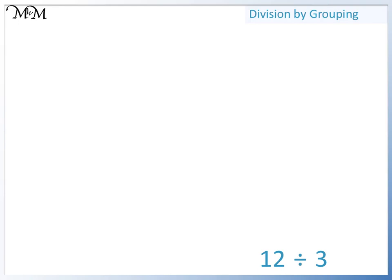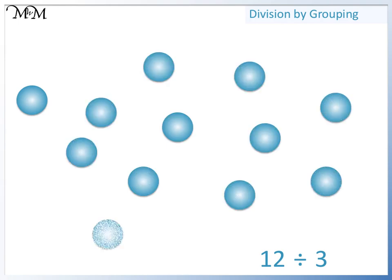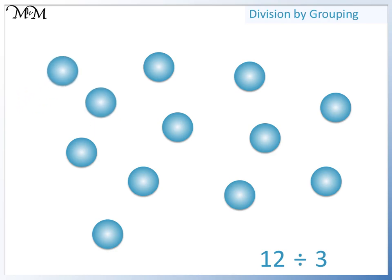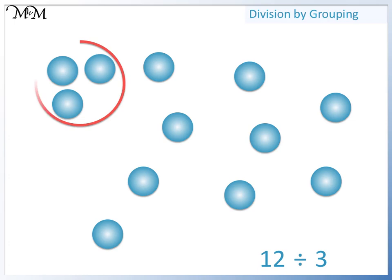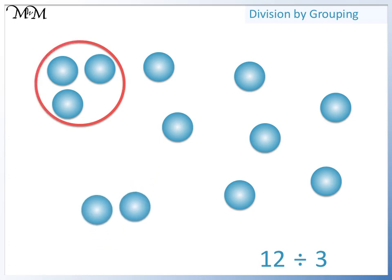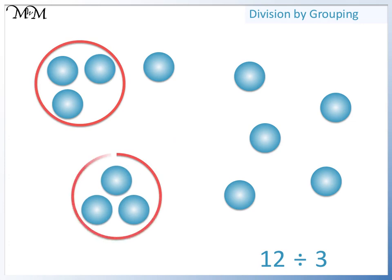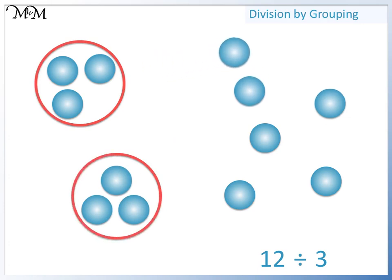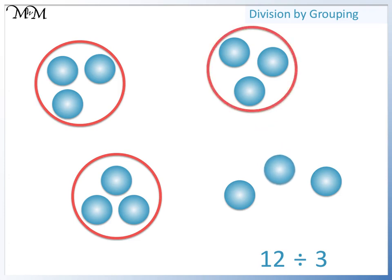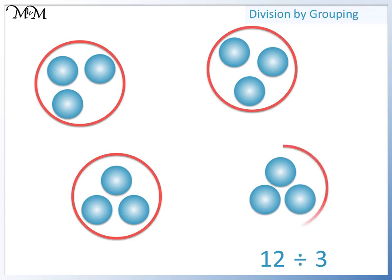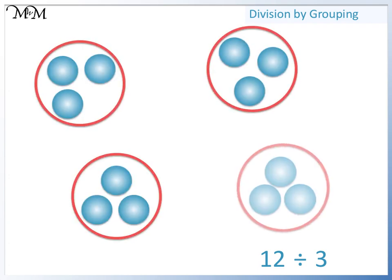Here we have 12 divided by 3. So we'll start with 12 counters. We are dividing by 3, so we can divide the counters into groups of 3. This is 1 group of 3, 2 groups of 3, 3 groups of 3, 4 groups of 3. All together there are 4 groups, so 12 divided by 3 equals 4.